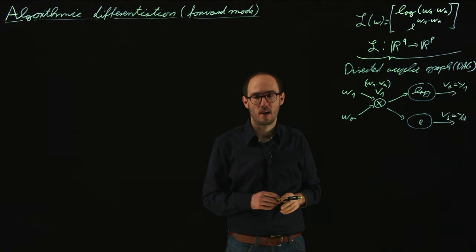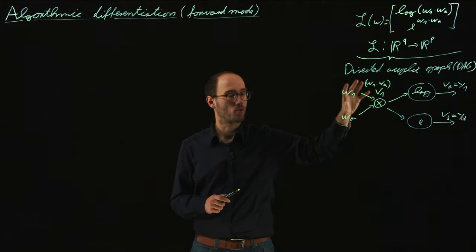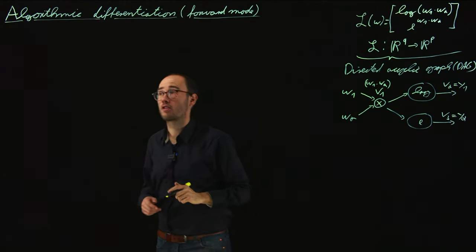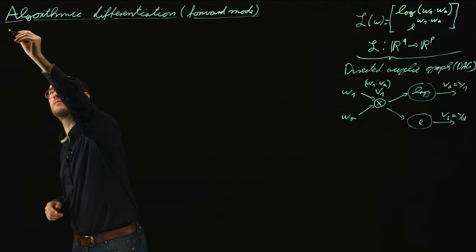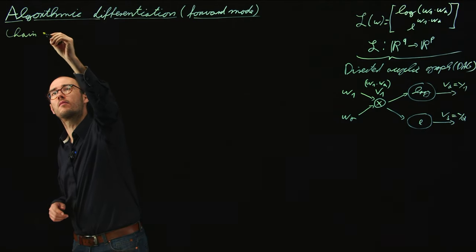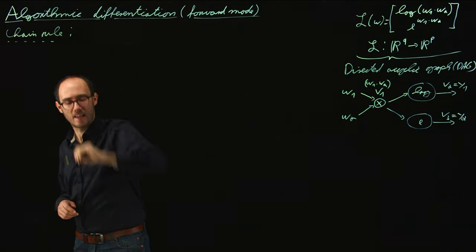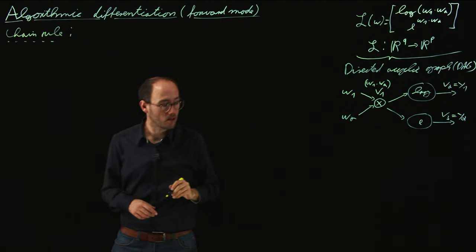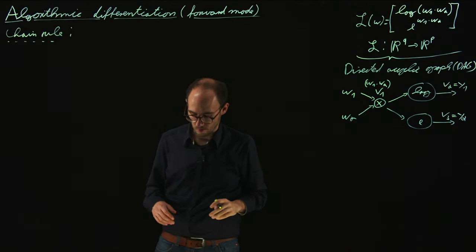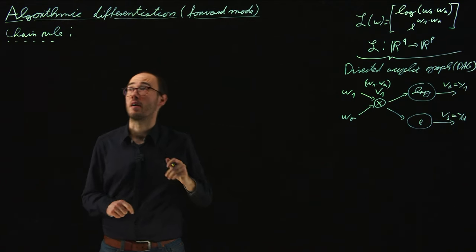What we do in automatic differentiation is basically utilize this graph representation and just apply the chain rule in order to calculate the Jacobian and, as part of that, the gradient and furthermore the Hessian information.